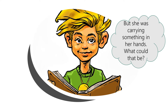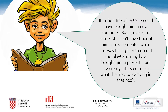On the other hand, she can't be yelling at him because of that since it was she who told him to go out. You may be right. But she was carrying something in her hands — what could that be? Do you have any ideas, Harry? It looked like a box. She could have bought him a new computer, but it makes no sense. She can't have bought him a new computer when she was telling him to go out and play. She may have bought him a present. I am now really interested to see what she may be carrying in that box.